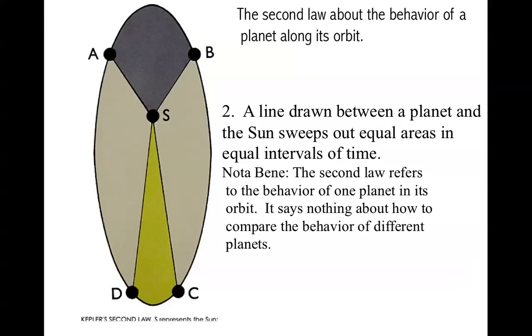The second law, which applies to the behavior of a single planet along its orbit, states that a line drawn between a planet and the sun sweeps out equal areas in equal times. What this means is that the planet moves slower when it's farther from the sun and faster when it's closer.